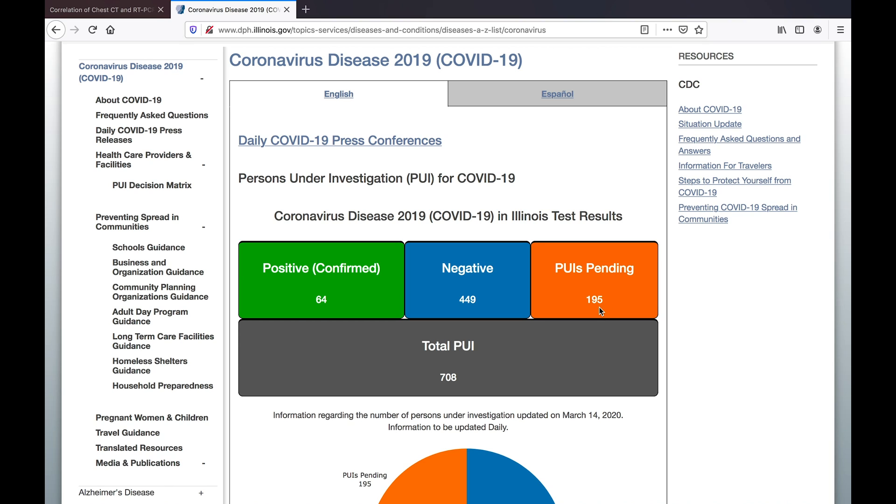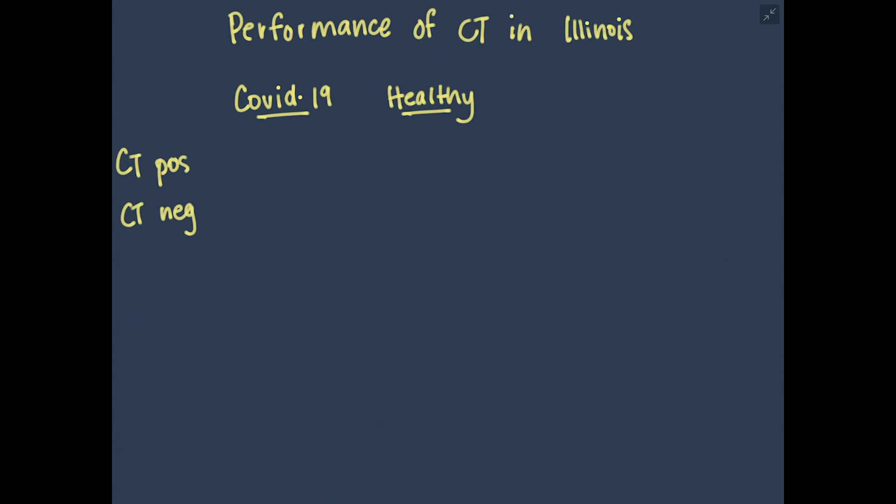Okay, so now that we know the sensitivity and specificity of CT for COVID based on the prior study from China, we can plug in these numbers to determine the predictive value of the test in our patient population. So based on this current public health data, let's work backwards to fill in this chart.